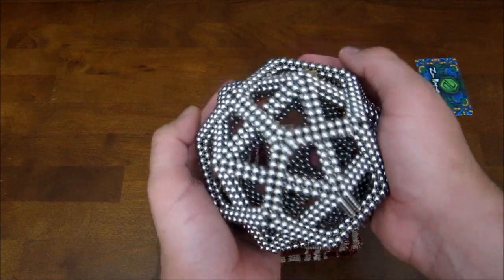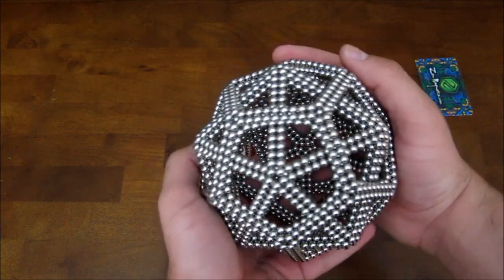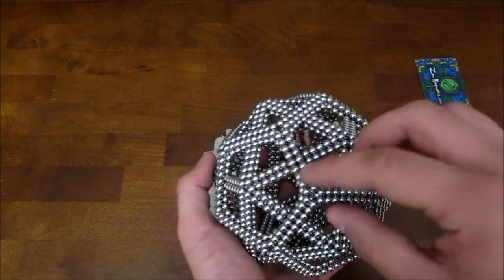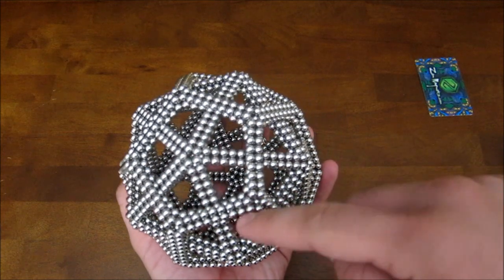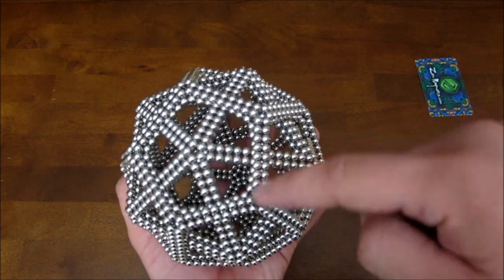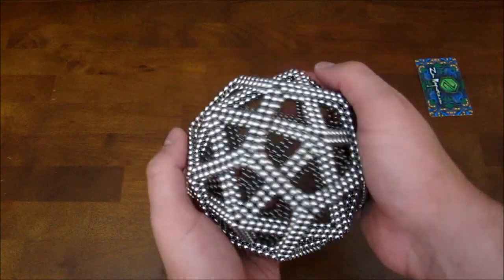And there you go. That's how you build the deltoidal hexacontahedron. And if you're wondering why it's called that, I didn't make the name up. It's because there are 60 deltoid faces across the surface of the whole thing.